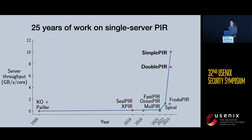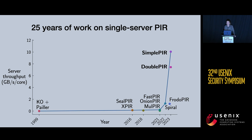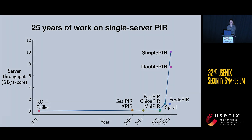This talk is about our two new single-server PIR schemes, SimplePIR and DoublePIR, that let the server process a database at a throughput of roughly 10 gigabytes per core-second — roughly an order of magnitude faster than prior work. I want to mention Frodo PIR, independent concurrent work based on a similar idea. Also, I'm only showing one metric here: server throughput. These large throughput gains come at some communication overheads, which I'll argue are manageable for some applications.